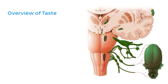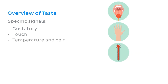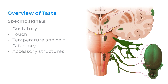Taste is a really interesting sense, as it is the interaction of several specific signals. There are four of these: the gustatory or taste signals from gustatory cells on the taste buds; touch signals — in other words, information on texture from mechanoreceptors in the oral cavity, sometimes referred to as mouth feel; temperature and pain signals from bare nerve endings in the oral cavity; and olfactory or smell signals from the olfactory epithelium of the cribriform plate in the nasal cavity. There are also some accessory structures assisting with detection of taste, which we'll talk about a little bit later.